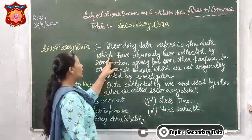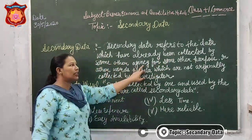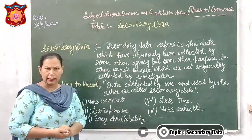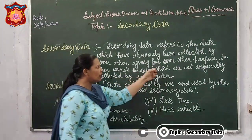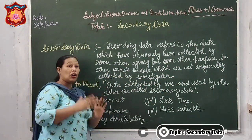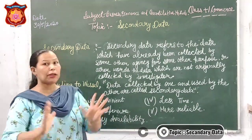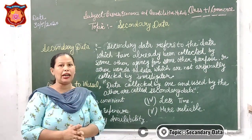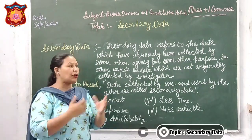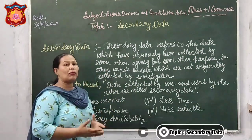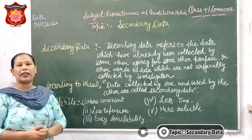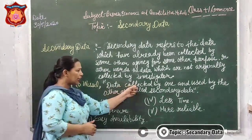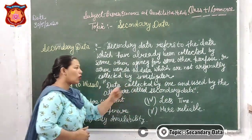Secondary data refers to data which has already been collected by another agency for some other purpose. Secondary data is data that an agency has collected for some other purpose. In other words, it is data which is not originally collected by the investigators. According to Vessel, data collected by one and used by another are called secondary data.